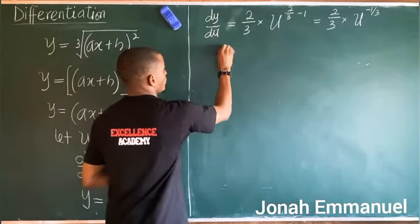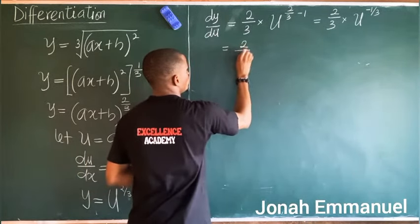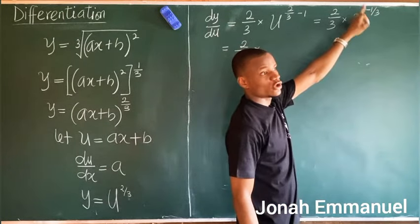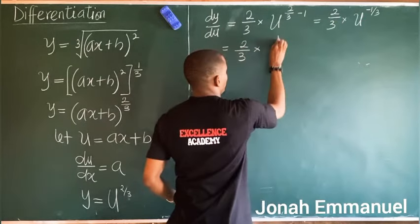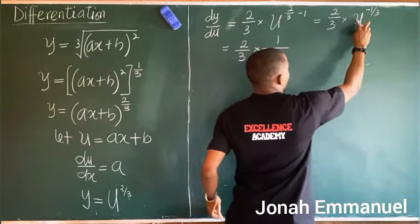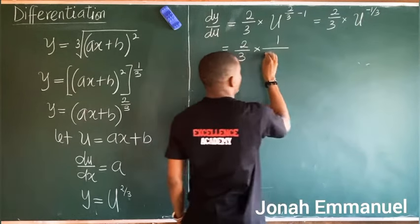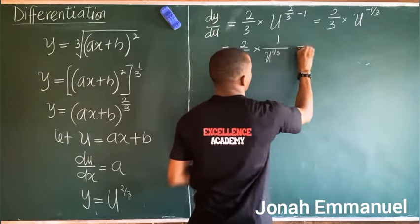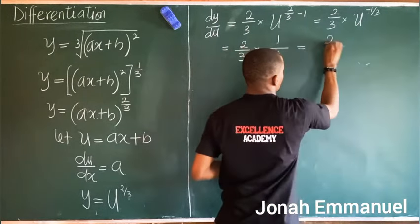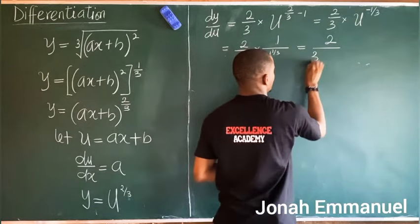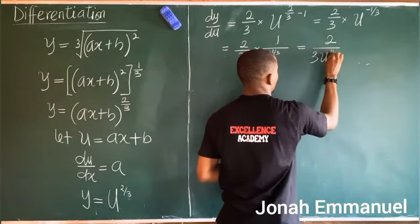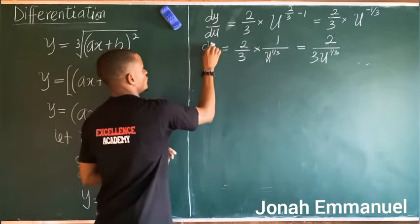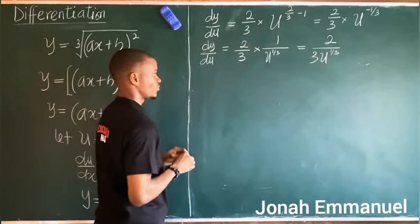To eliminate the negative exponent, I take the inverse: dy/du becomes two over three times one over u to the power one over three, which simplifies to two over three u to the power one over three.